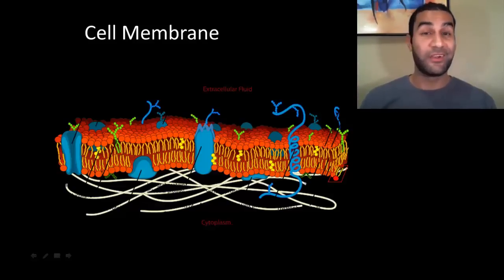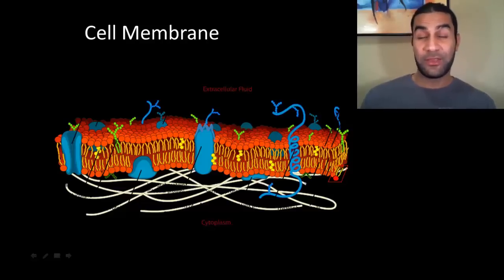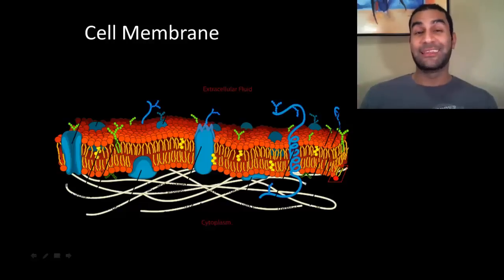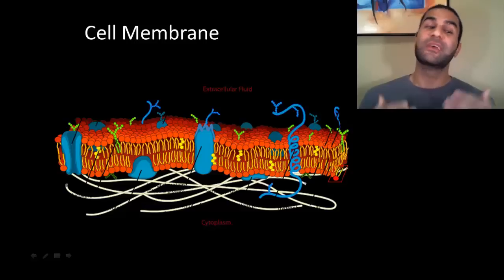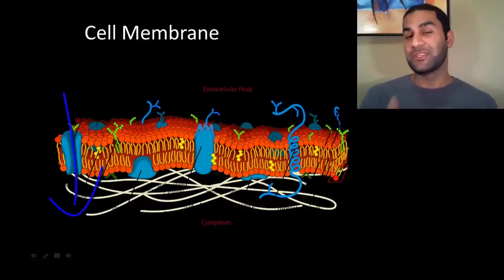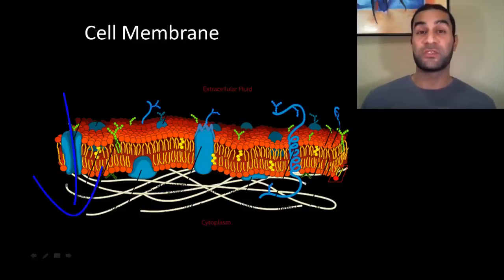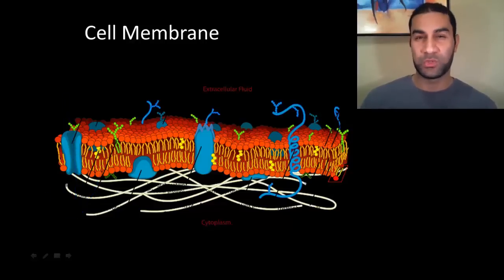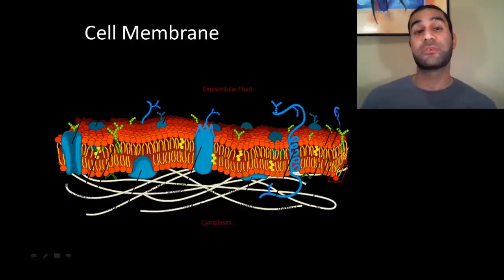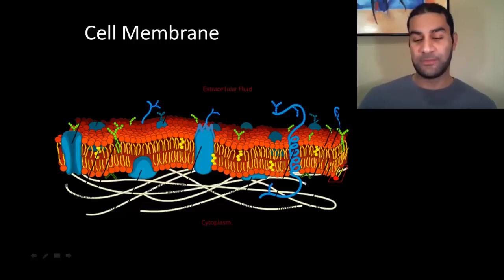However, channel proteins give molecules a second chance. Maybe they're just too big to pass straight through the membrane, but for channel proteins the gap is much wider than the gap typically available between the phosphates. So now molecules that are too big to fit normally can still pass through the membrane easily using these channel proteins. Channel proteins allow for a larger space for slightly larger molecules to pass through a membrane.